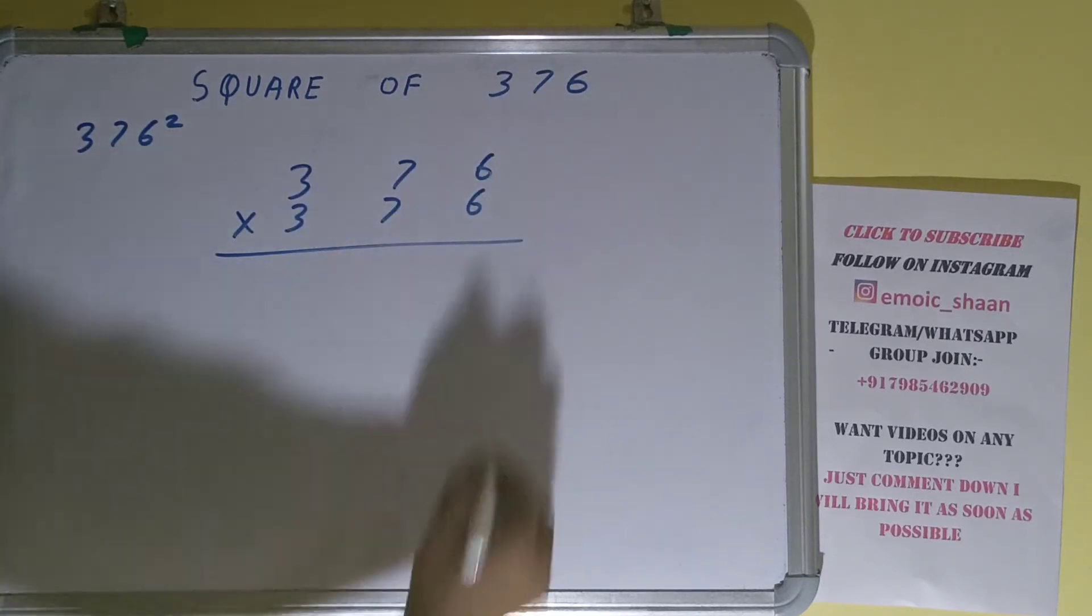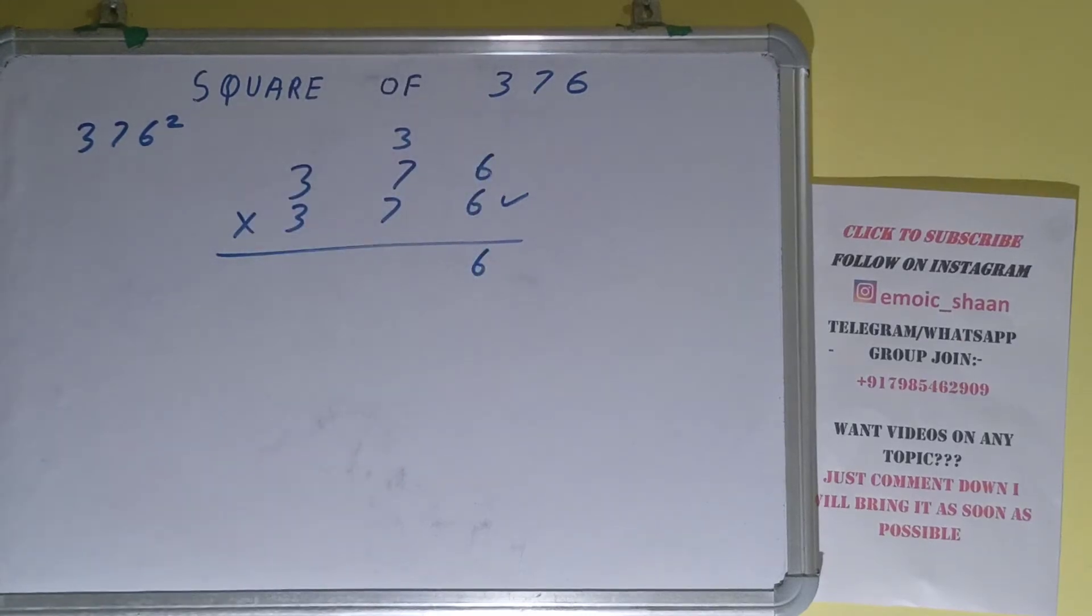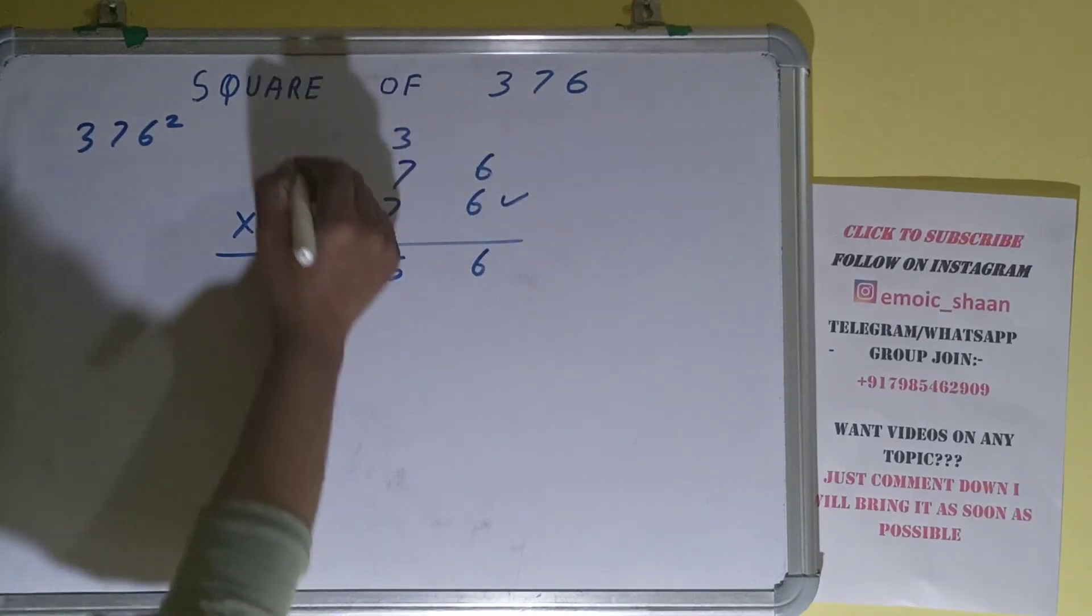So let's begin with this. 6 times 6 is 36, 3 carry, 6. 7 times 6 is 42 plus 3 is 45, 4 carry. 6 times 3 is 18 plus 4 is 22.